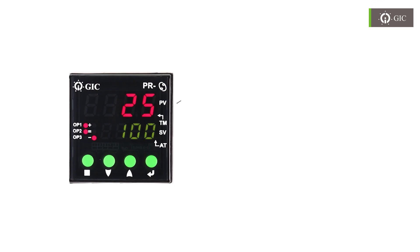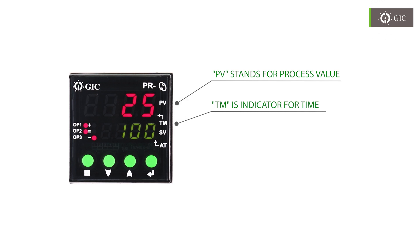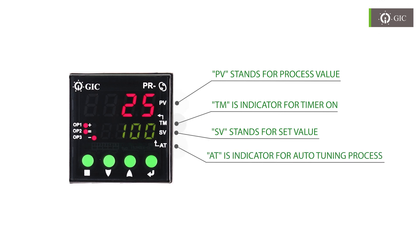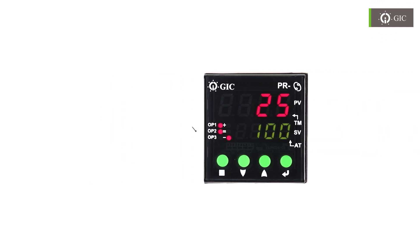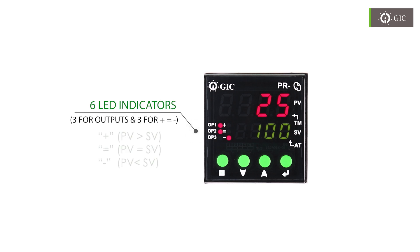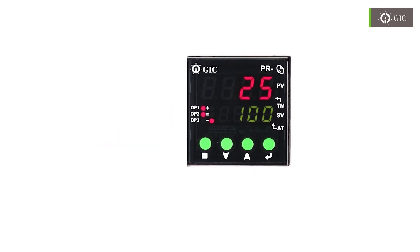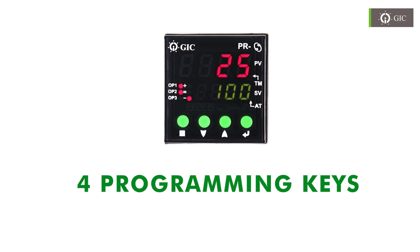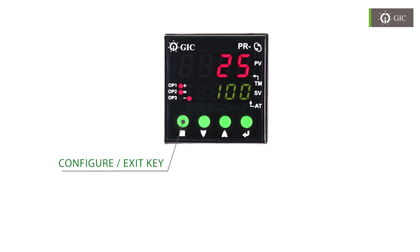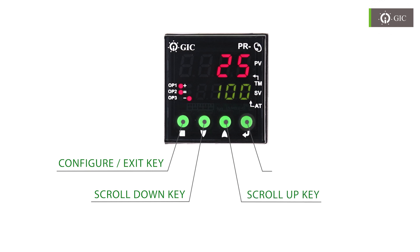This is how the product looks. PV stands for process value. TM is the indication for timer process on. SV stands for set value. 80 is the indication for auto tuning process. There are 6 LED indications: 3 for outputs and 3 for positive equals negative. There are 4 keys for programming the device: a configurable exit key, a scroll down, a scroll up, and an enter key.